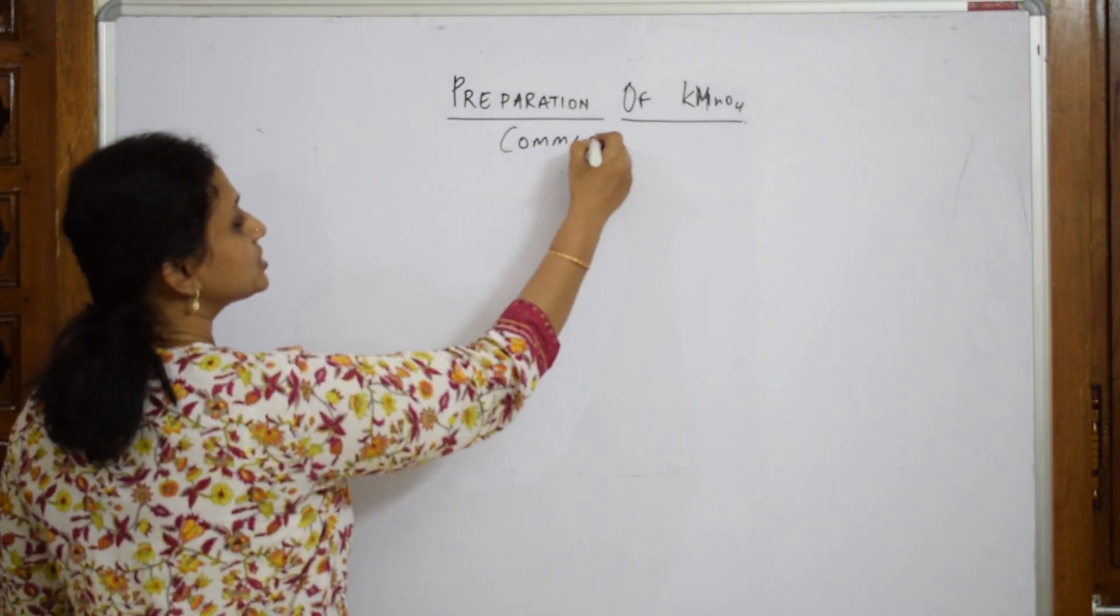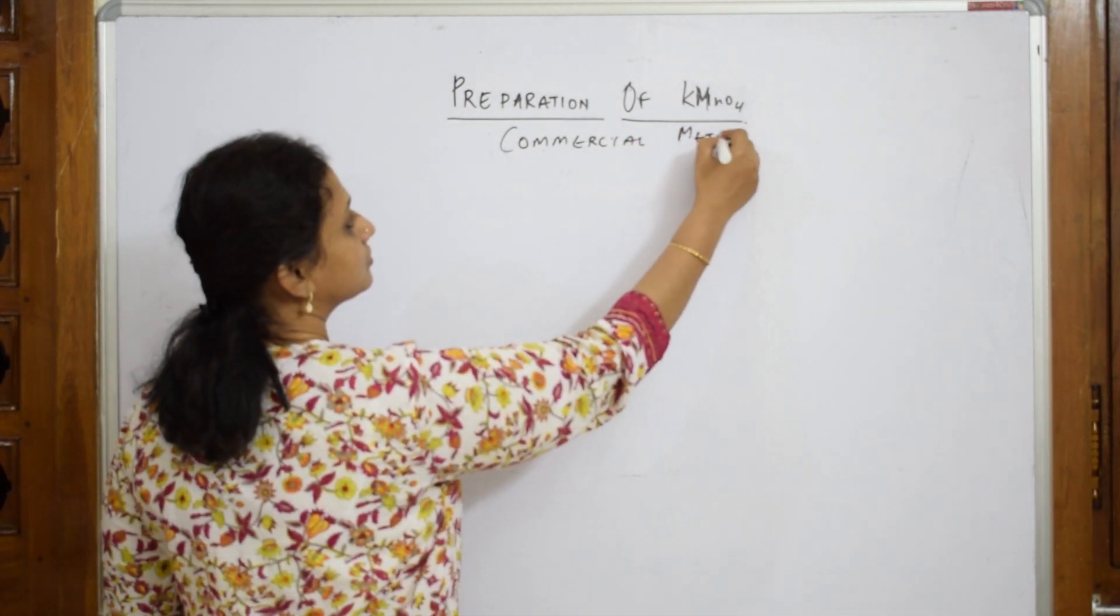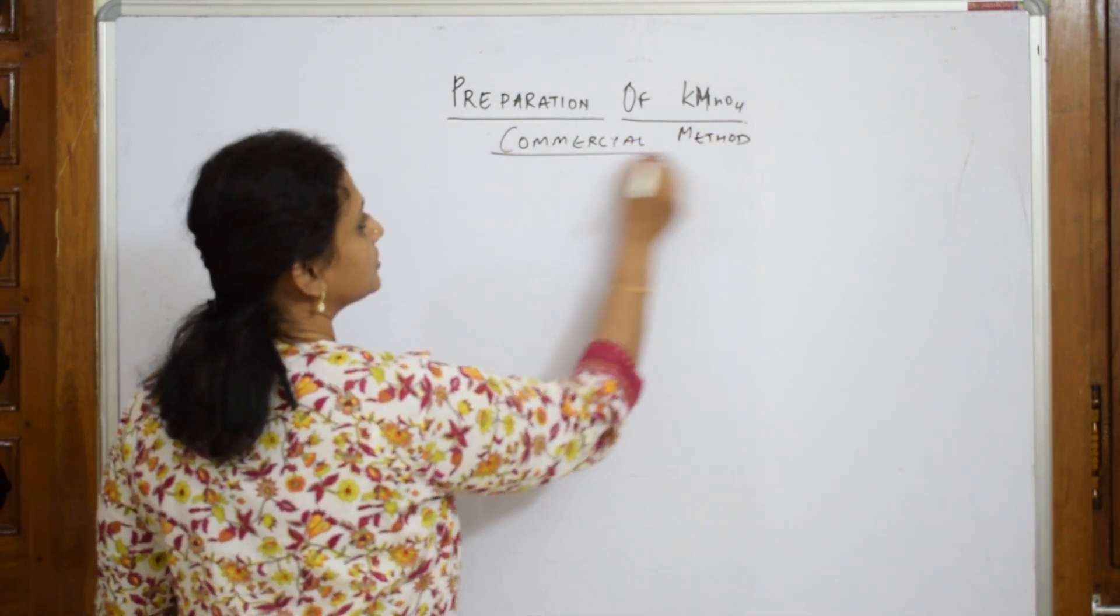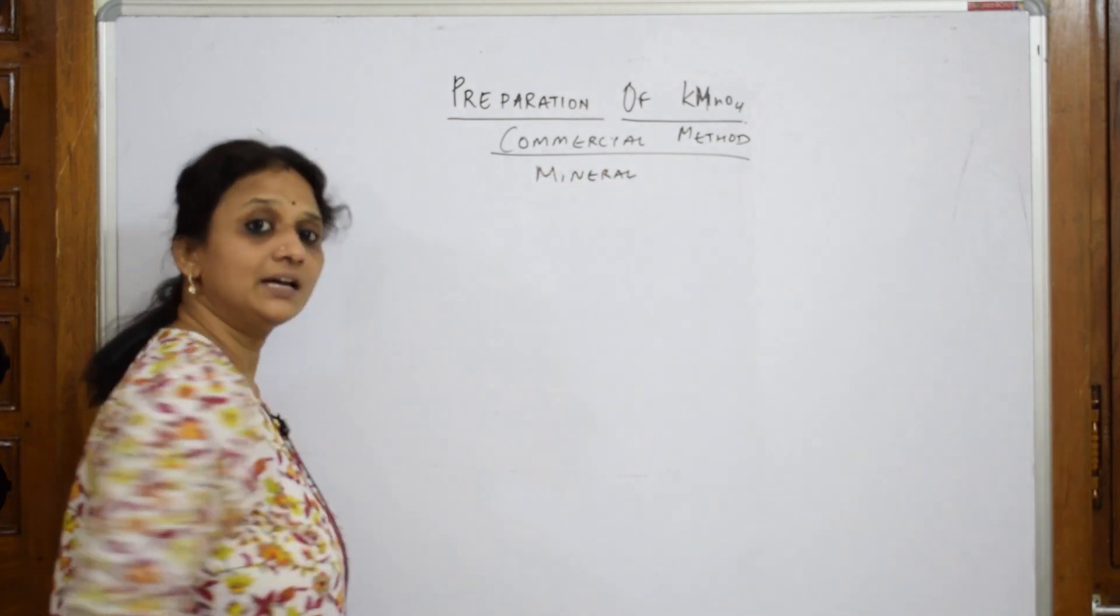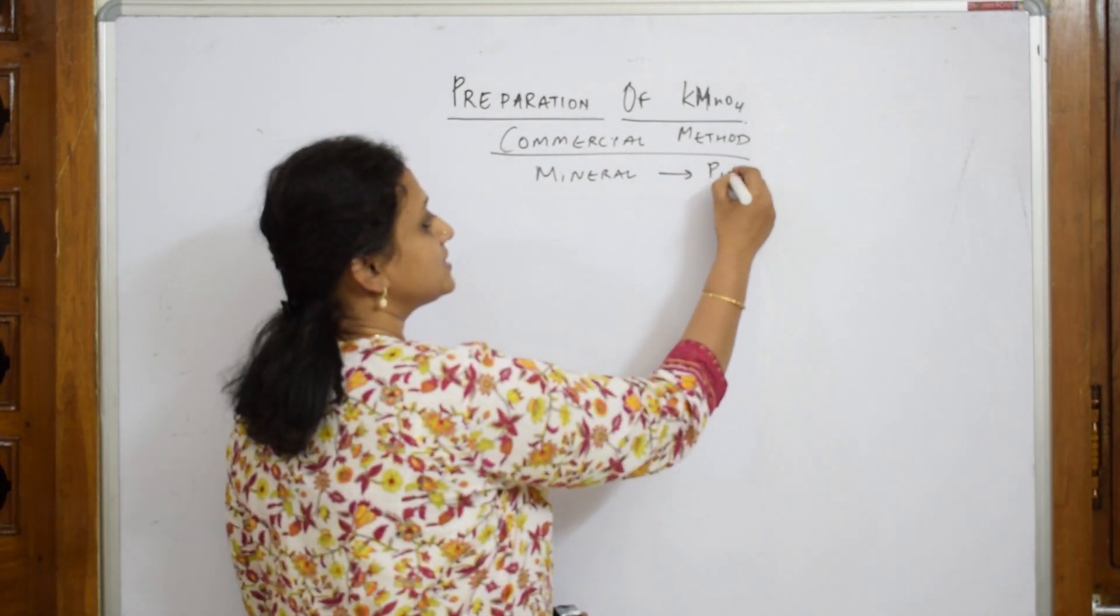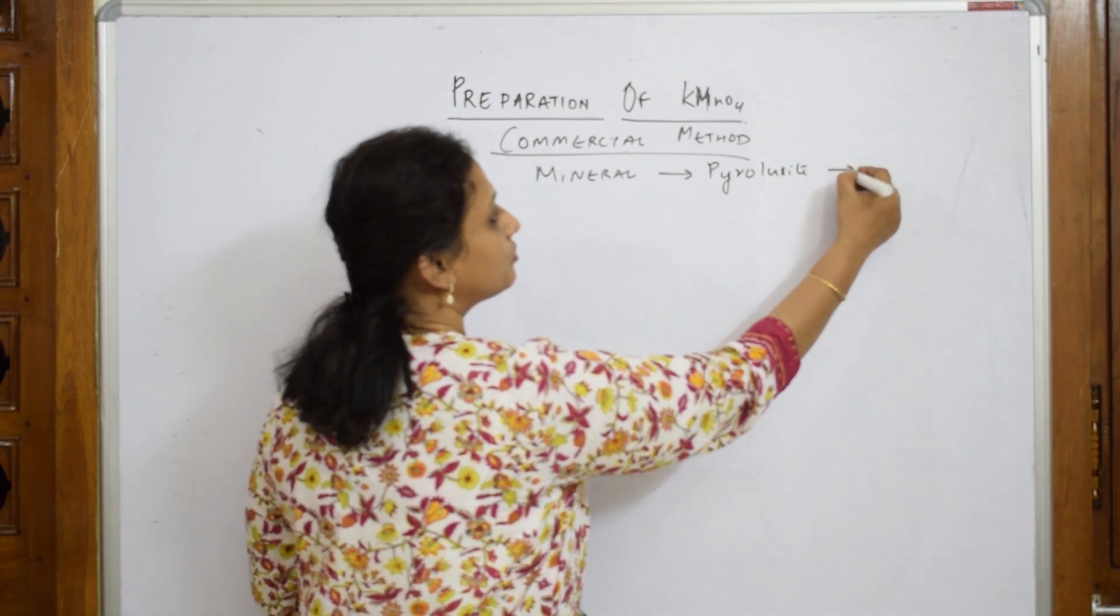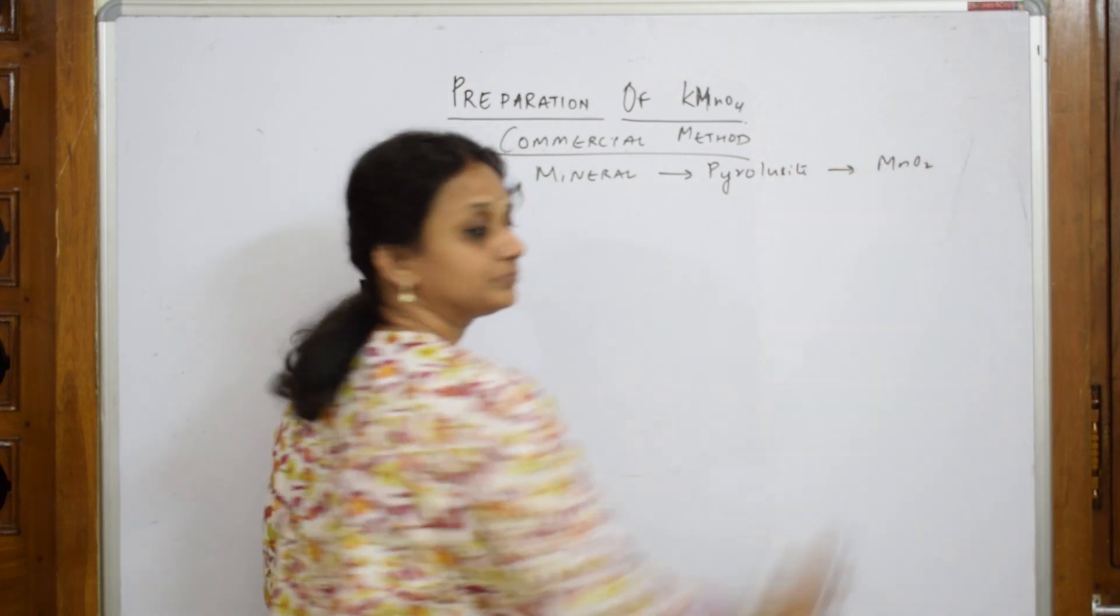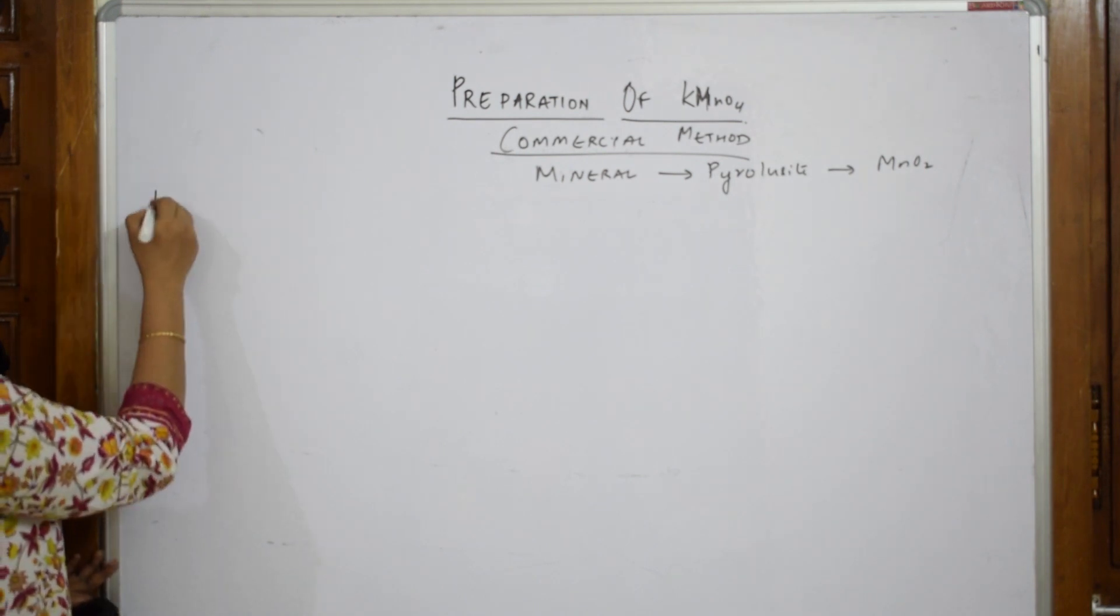In commercial method, I'm going to use a mineral of potassium permanganate. That mineral is called pyrolusite. As I already said, pyrolusite is a mineral and the formula for this is MnO2. I'm going to take that pyrolusite. Let us write in words now.